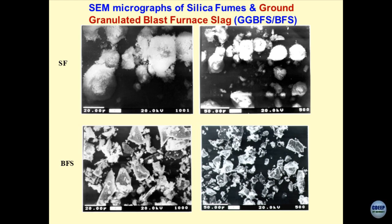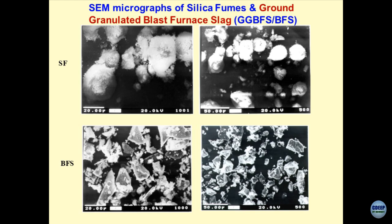Now this is BFS — blast furnace slag — which comes out of blast furnaces where steel is being manufactured. What you are observing is that these are basically highly irregular-shaped materials and hence they are inert. We use the term ground granulated blast furnace slag (GGBFS) — you take this material and pulverize it. Until now we were talking about chemical alteration; now what we are doing is activating a material by giving it a physical process — grinding — and the more you grind it, it becomes hyperactive.